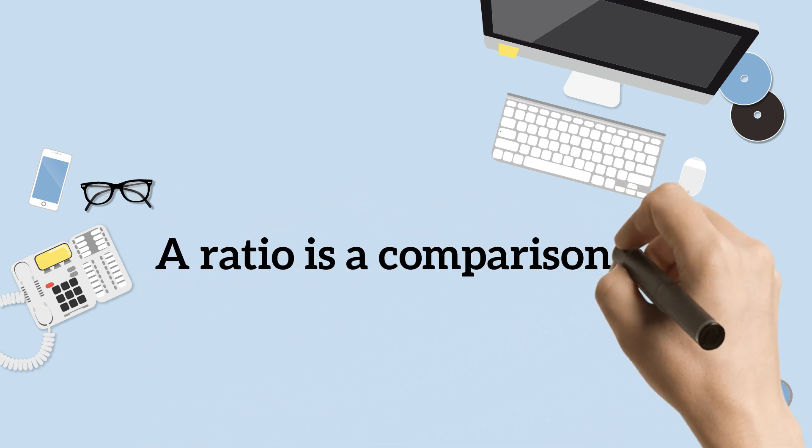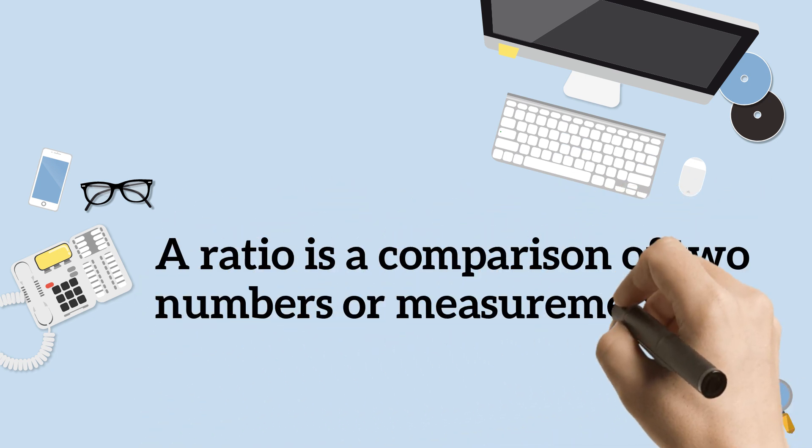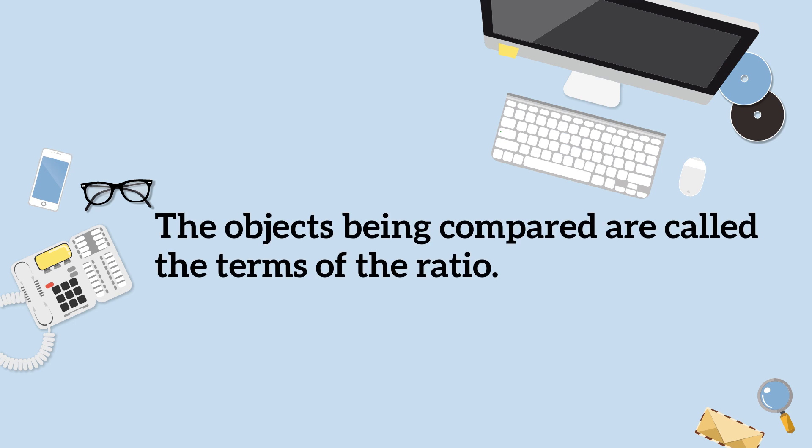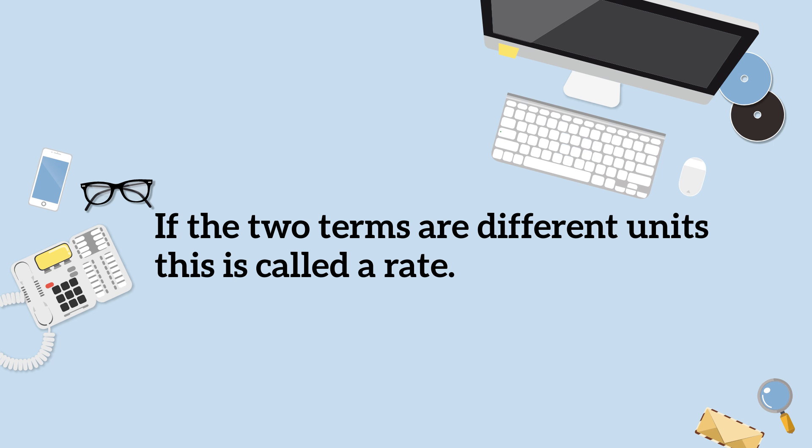A ratio is a comparison of two numbers or measurements. The objects being compared are called the terms of the ratio. If the two terms are different units, it is called a rate.